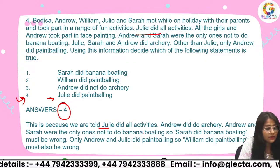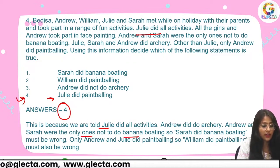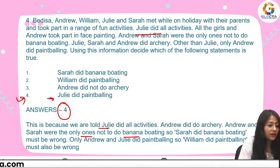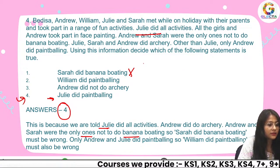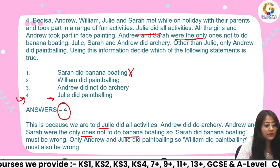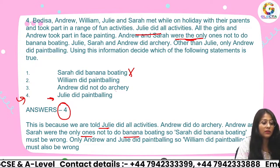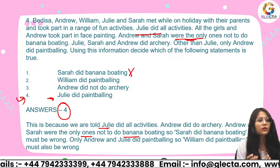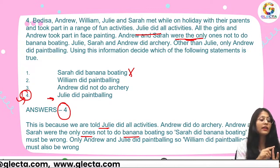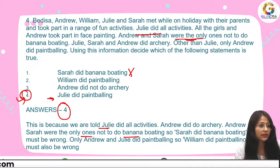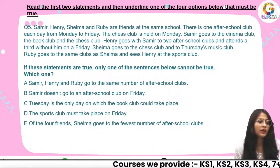We are told Julie did all activities. Andrew did not do archery. Andrew and Sarah were the only ones not to do banana boating, so the statement that Sarah did banana boating must be wrong. Reading the question carefully, B is also incorrect. The right answer is four — Julie is the only one doing all activities. Options one, two, and three are incorrect.